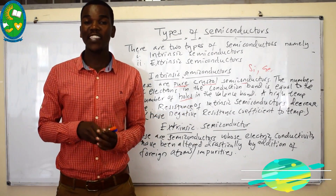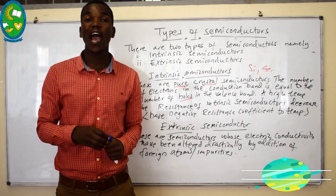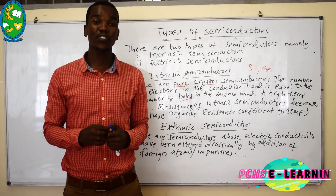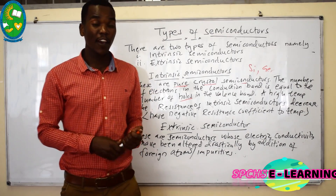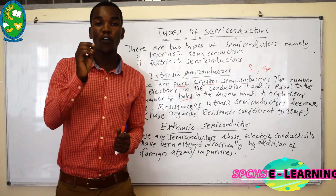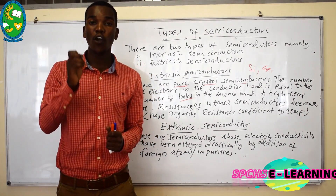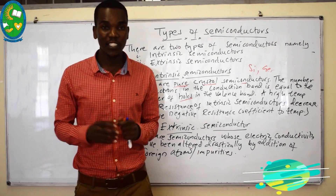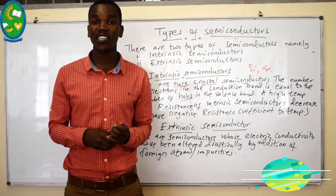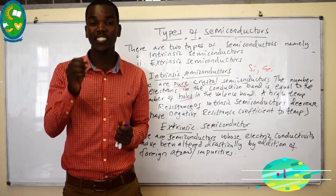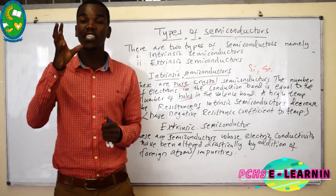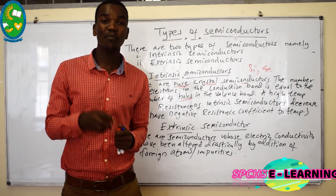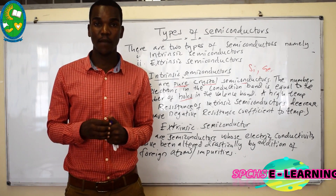It is not simply a hole — it is a positive charge. Remember, electrons are negatively charged. Therefore, the number of electrons in the conduction band and the number of holes in the valence band in intrinsic semiconductors are the same, because the same number of electrons leaving creates the same number of holes.